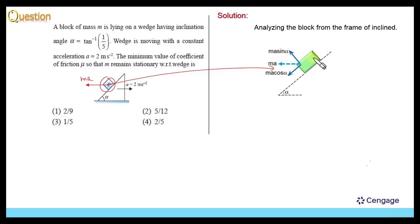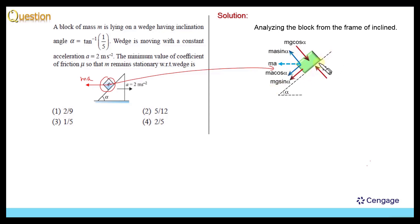The component of the weight perpendicular to the incline is MG cos α, and this is MG sin α. This is the normal reaction. This is the friction force, which is opposing the sliding tendency of the block, which is in the downward direction. So this is our friction force, which is static in nature.